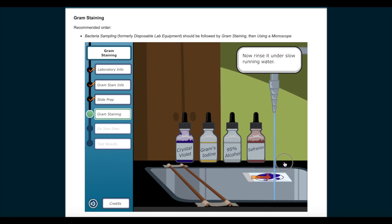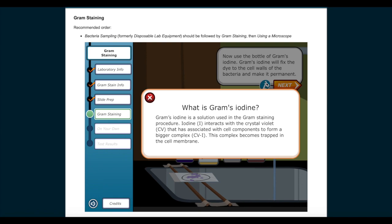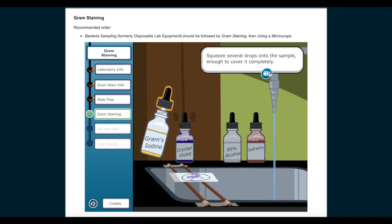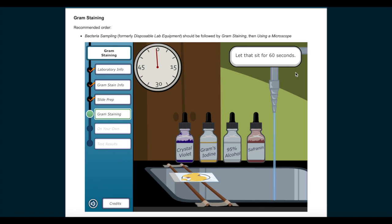Now use the bottle of Grams iodine. Grams iodine will fix the dye to the cell walls of the bacteria and make it permanent. What is Grams iodine? Grams iodine is a solution used in the Gram staining procedure. Iodine interacts with the crystal violet that has associated with cell components to form a bigger complex. This complex becomes trapped in the cell membrane. Squeeze several drops onto the sample, enough to cover it completely. Let that sit for 60 seconds. Now rinse it under slow running water.